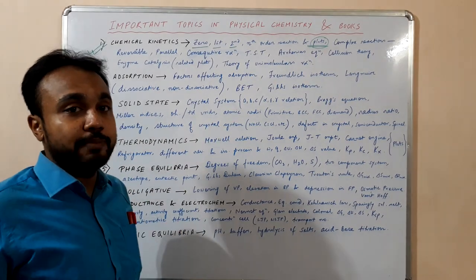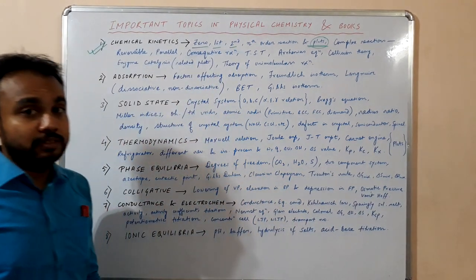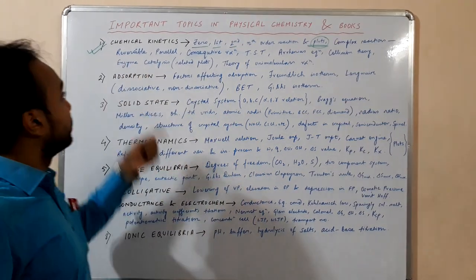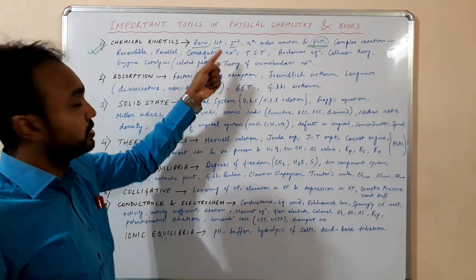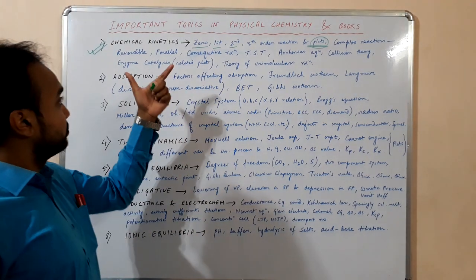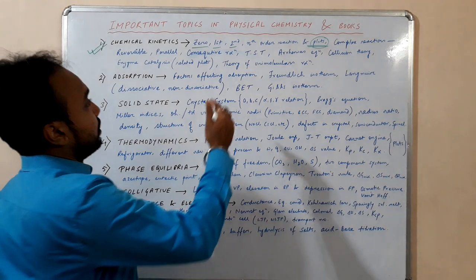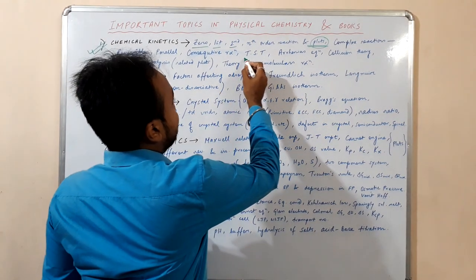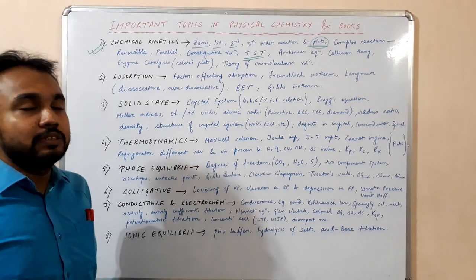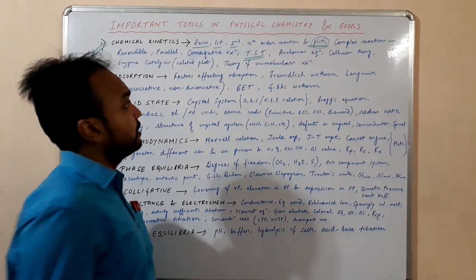The concentration versus time plot is key. Next are the complex reactions like reversible reactions or opposing reactions, parallel reactions, and consecutive reactions — these three you have to study accurately. Then is the transition state theory. In transition state theory you have to read the delta H, delta G, and delta S values of the transition state.